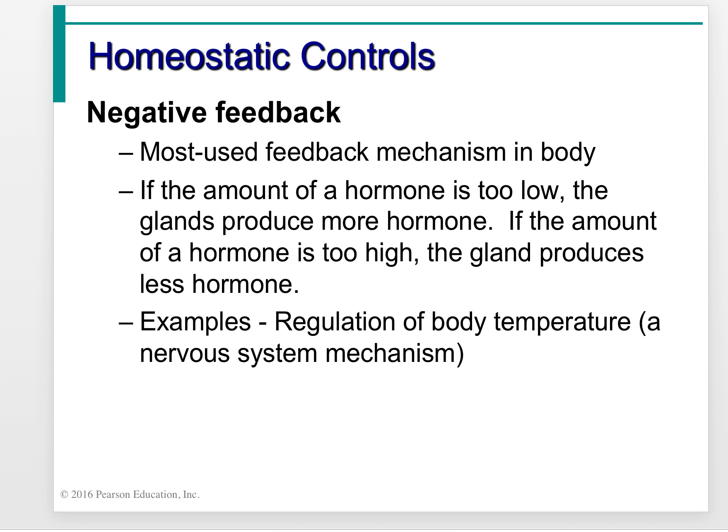The negative feedback system is the most used feedback system in the body. If the amount of hormone is too low, the gland produces more hormone. If the amount of hormone is too high, the gland produces less hormone. That's the basics of negative feedback.